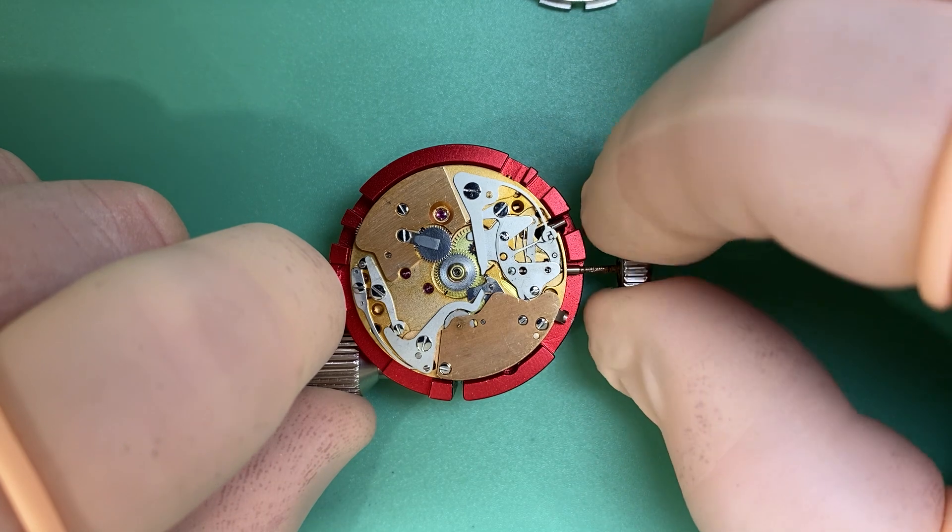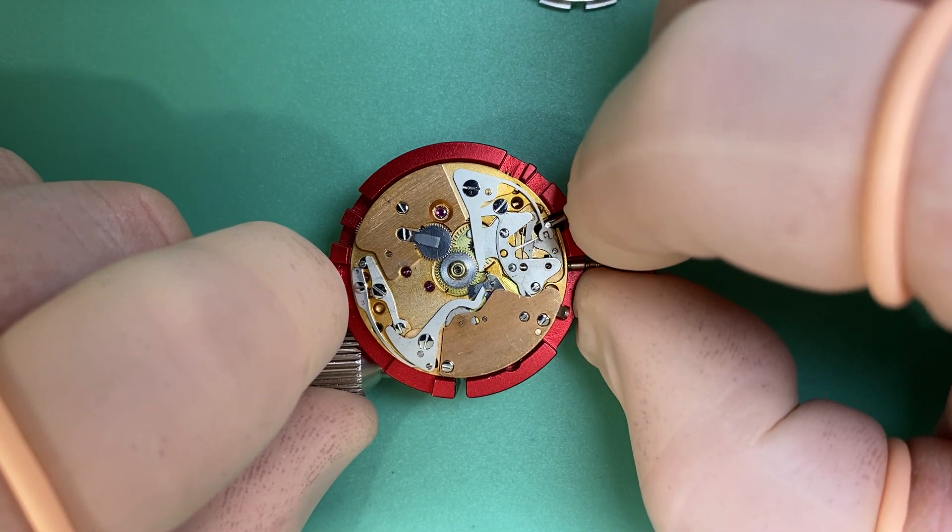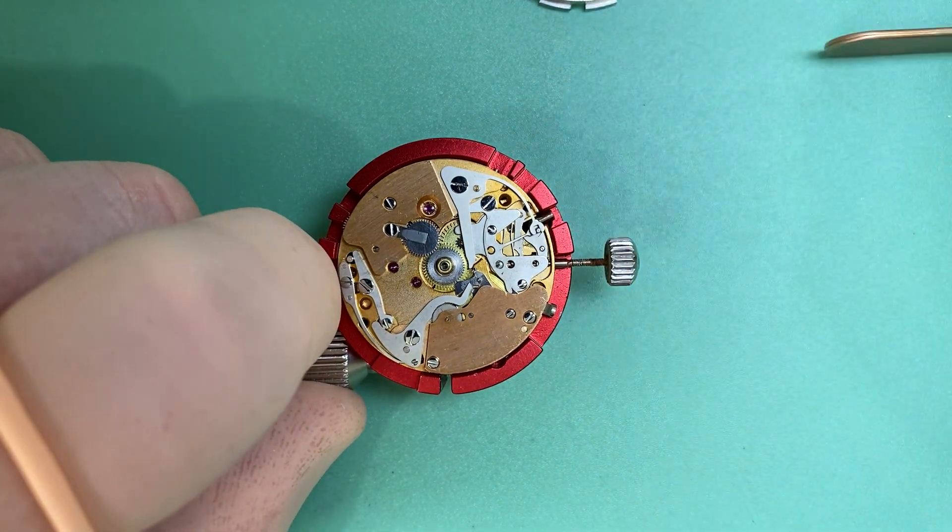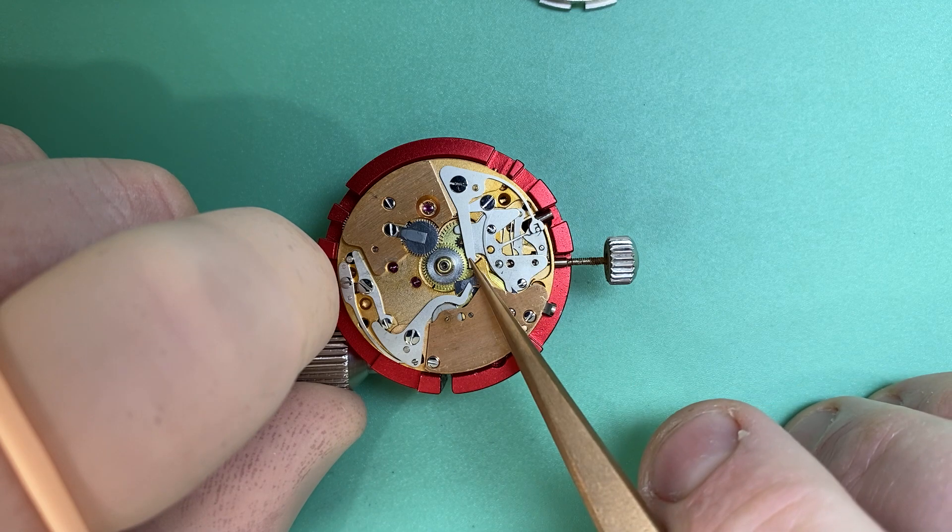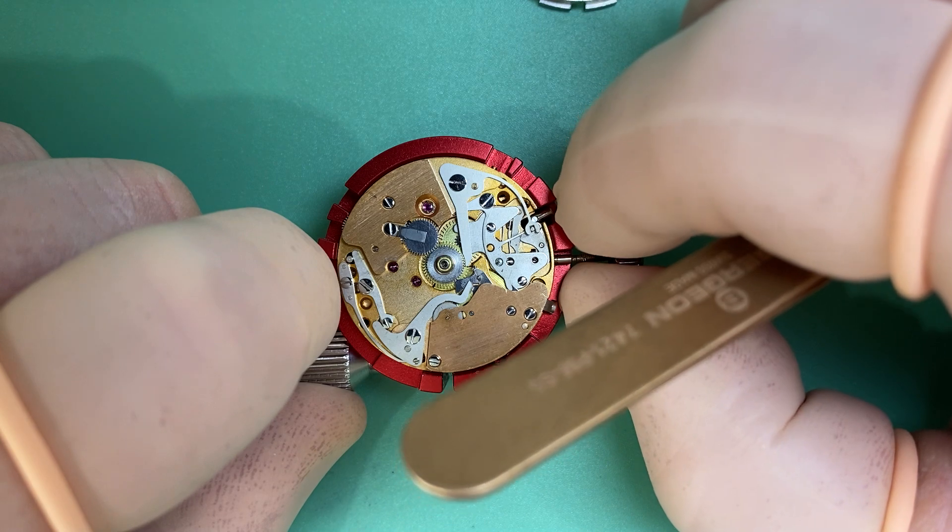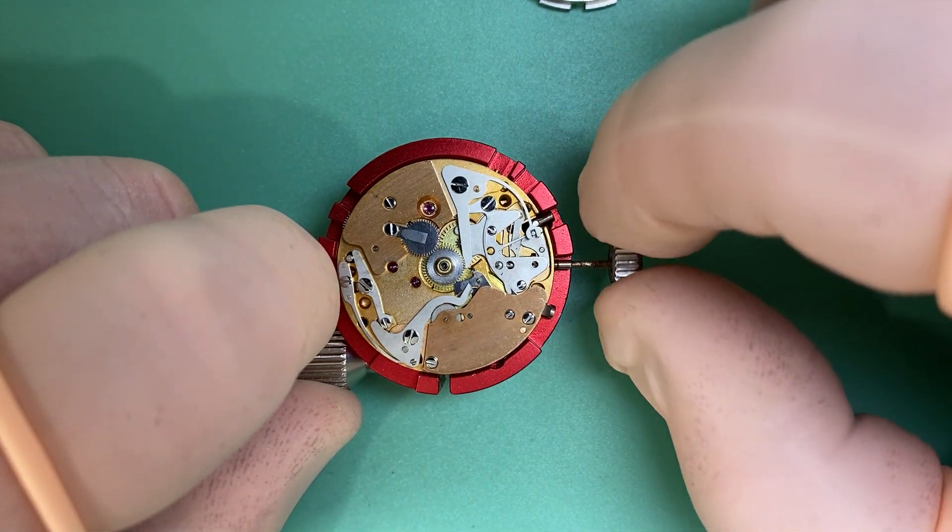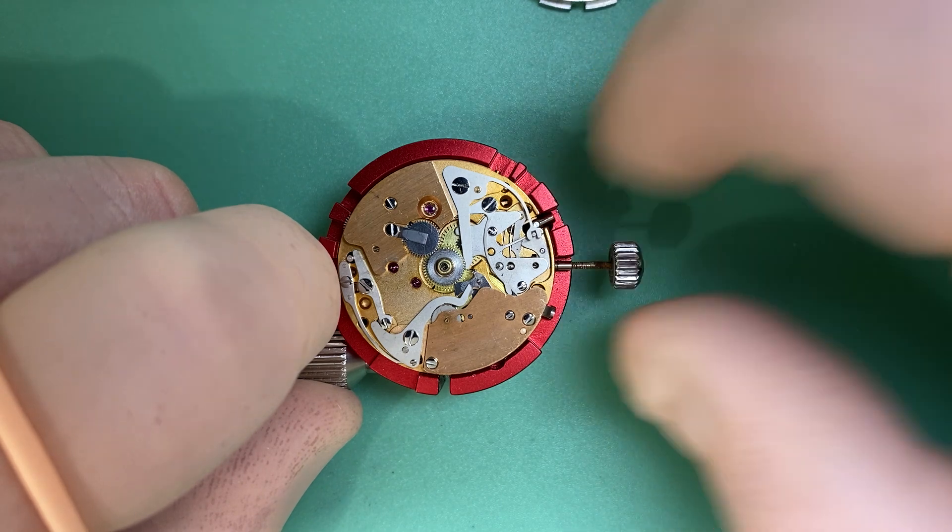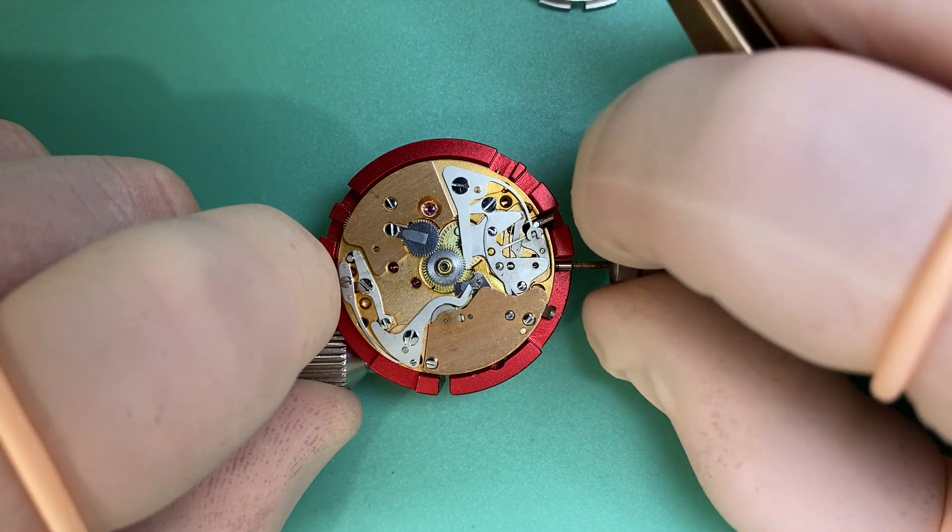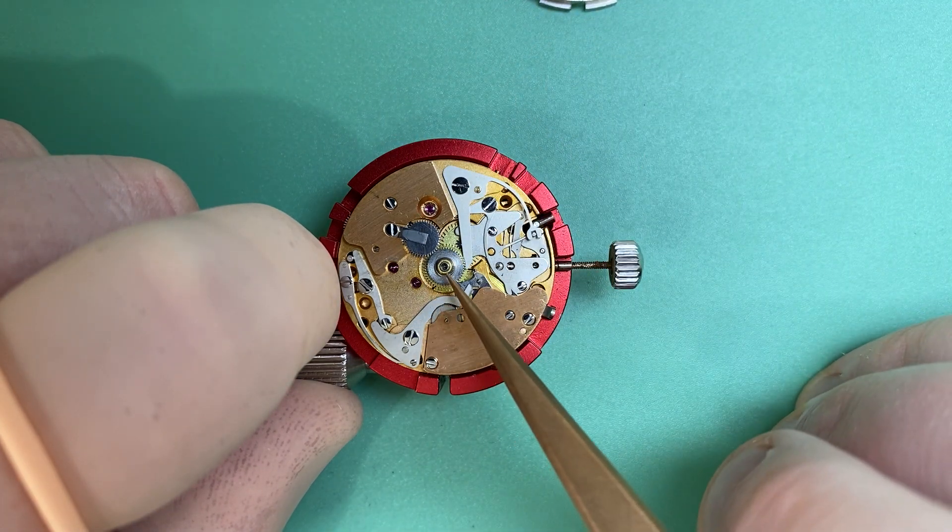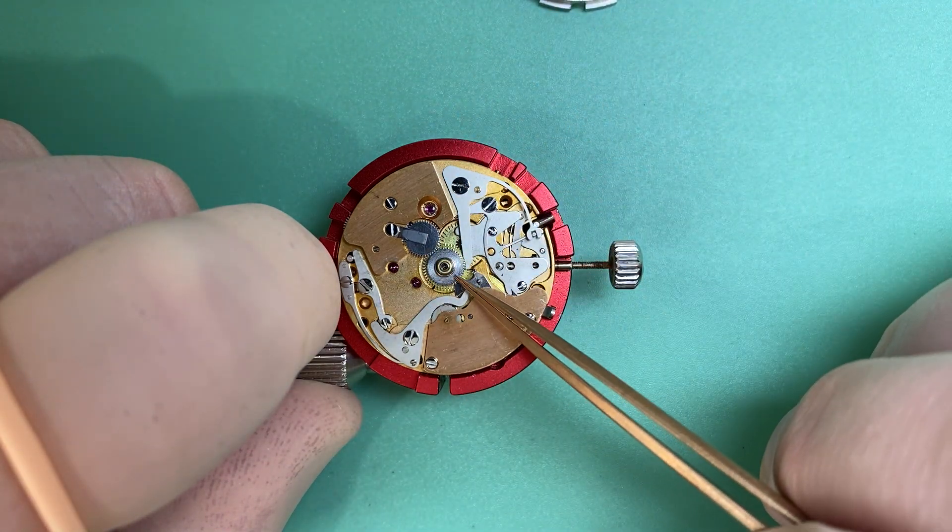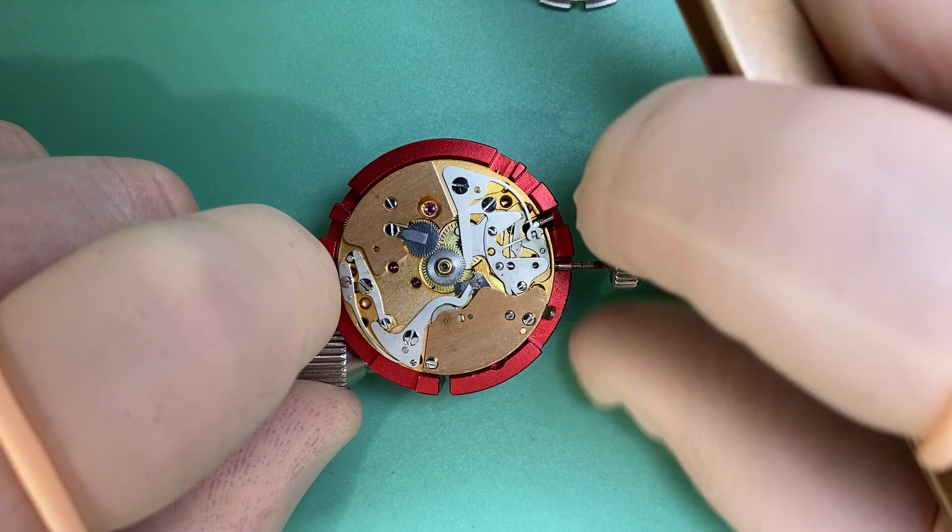So the watch is in the winding position. We move it to the hand-setting position. Now, we'll notice that when we move it to the hand-setting position, we see this lever here engage into this top wheel. Now, when we turn our hands here, we can see our minute wheel moving underneath, and we can see the teeth of our hour wheel moving, which is what our hour hand sits on. But we'll notice that our wheel on top, and this wheel here, they aren't moving.